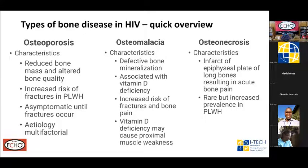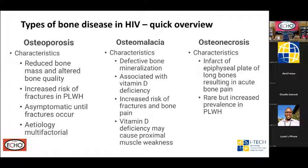By way of quick overview, the commonest chronic bone disease affecting persons living with HIV is osteoporosis, which we're going to focus on today. The characteristics are reduced bone mass and altered bone quality, and it is associated with increased risk of fractures. We're familiar with fragility fractures — someone stumbles going down a step and breaks a long bone, or trips and fractures a vertebra. Unlike common belief, osteoporosis tends to be asymptomatic until a fracture appears. If you have pain because of osteoporosis, you've probably already broken something. The etiology is multifactorial.